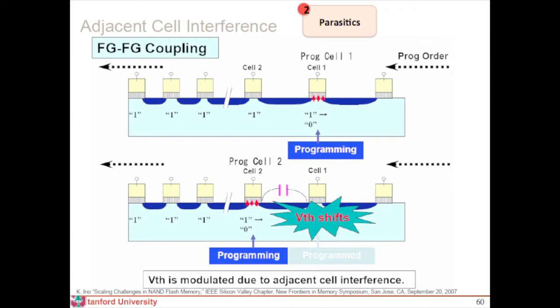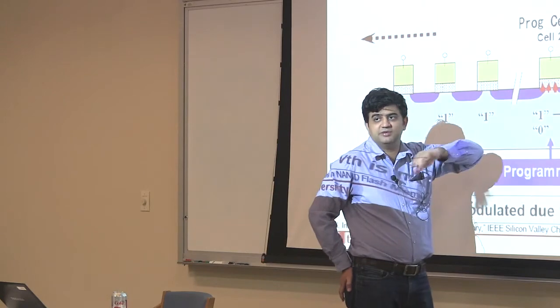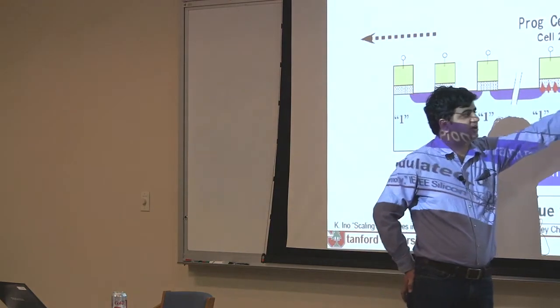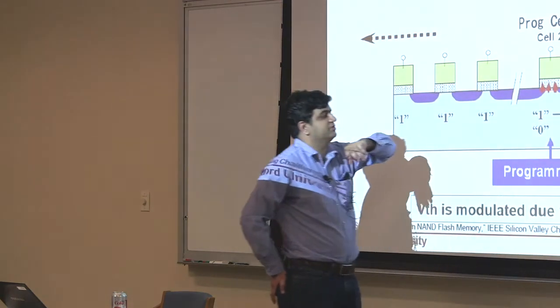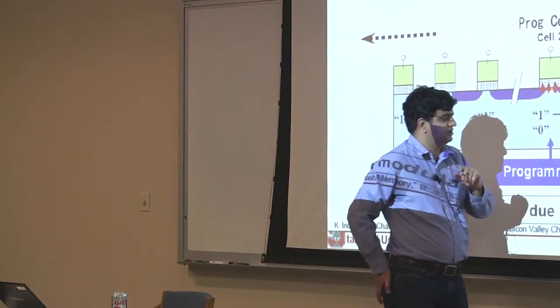The other thing which has become worse is floating gate coupling between two adjacent floating gates. The other big problem in scaling is parasitics. Shown here is this NAND array with multiple transistors. Things were fine when these transistors were far apart, but as you bring them closer, the capacitive coupling between them starts to become a problem. If you are programming one of these cells, it drives up the voltage in the other cell and tries to program it as well.